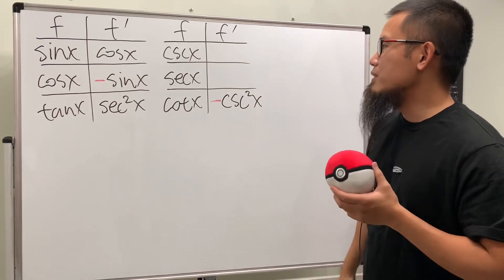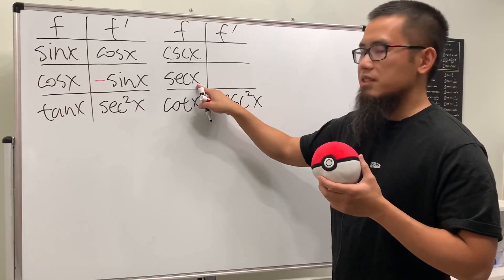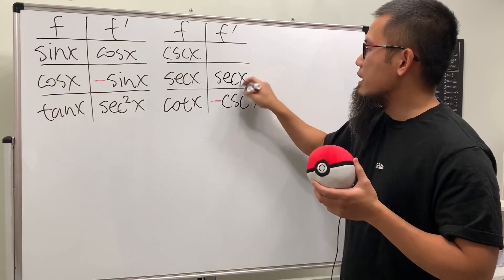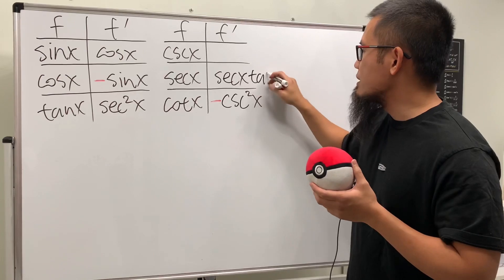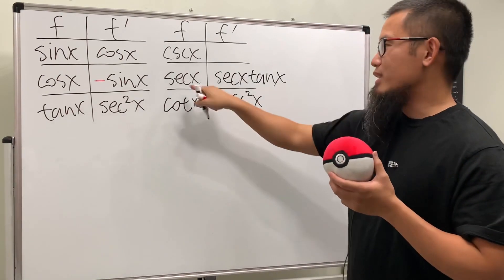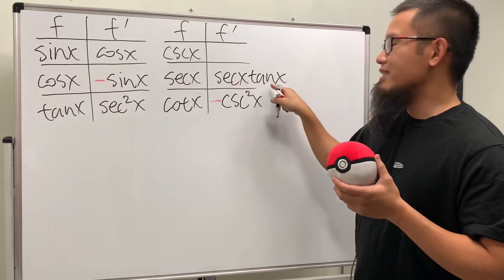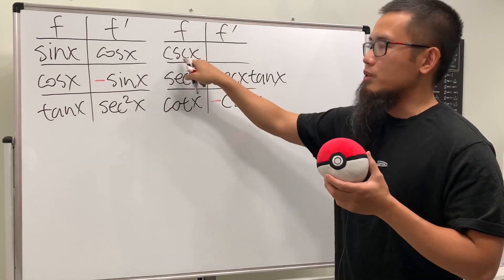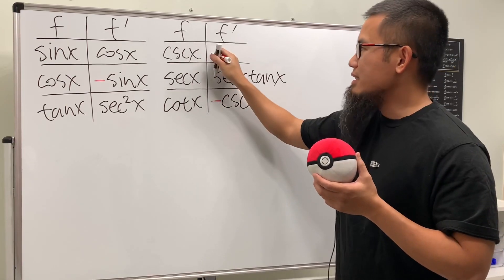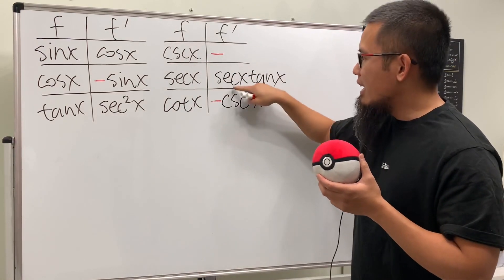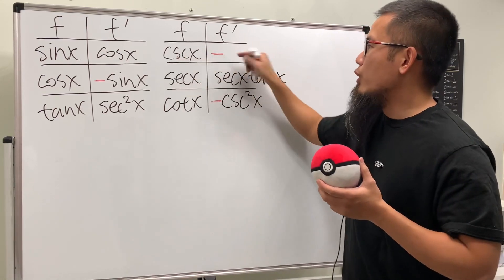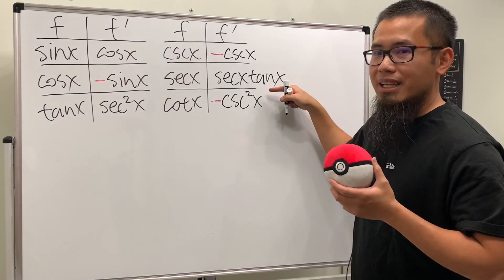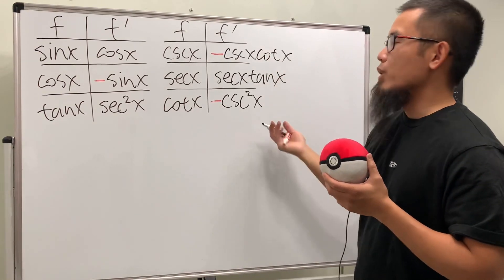Now we just need secant and cosecant. For secant x, the function repeats first, then multiply by its best friend tangent x — so the derivative of secant x is secant x times tangent x. And you can reason out cosecant from there: it's going to be negative, cosecant x repeats, and then we multiply by cotangent x. So the derivative of cosecant x is negative cosecant x times cotangent x.